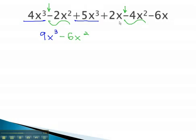Similarly, we can combine the x's. 2x is like the negative 6x. 2x minus 6x is negative 4x.